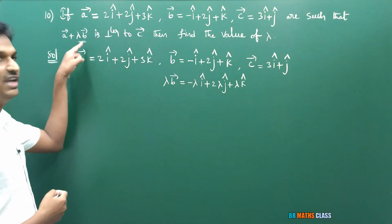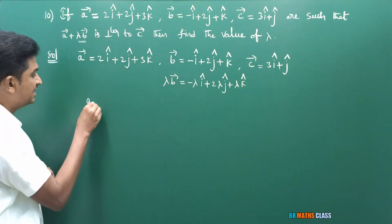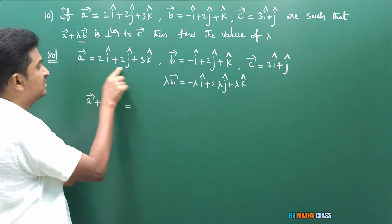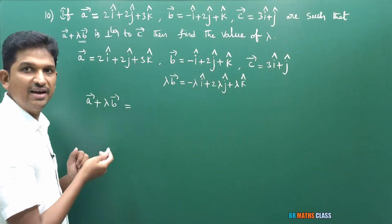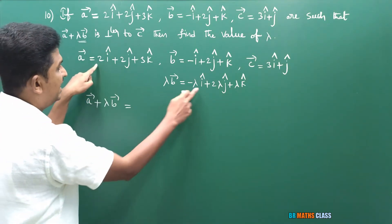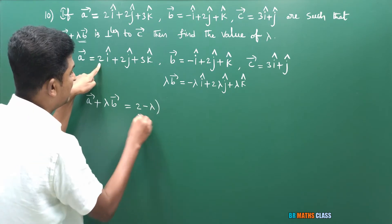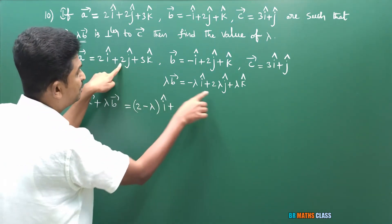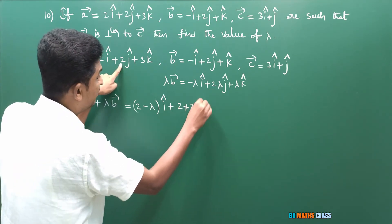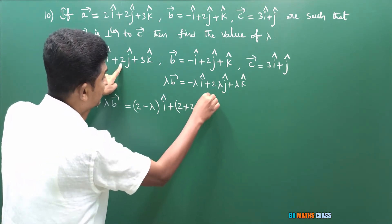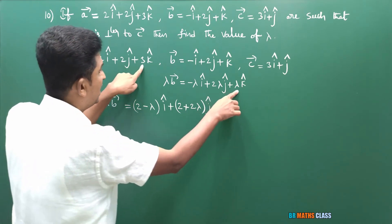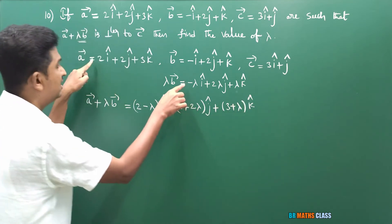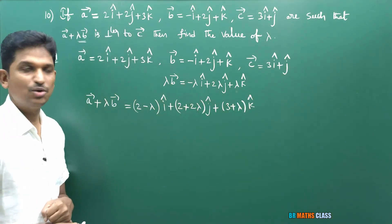Then a̅ + λb̅ = (2 − λ)î + (2 + 2λ)ĵ + (3 + λ)k̂. Since a̅ + λb̅ is perpendicular to c̅, their dot product equals zero.